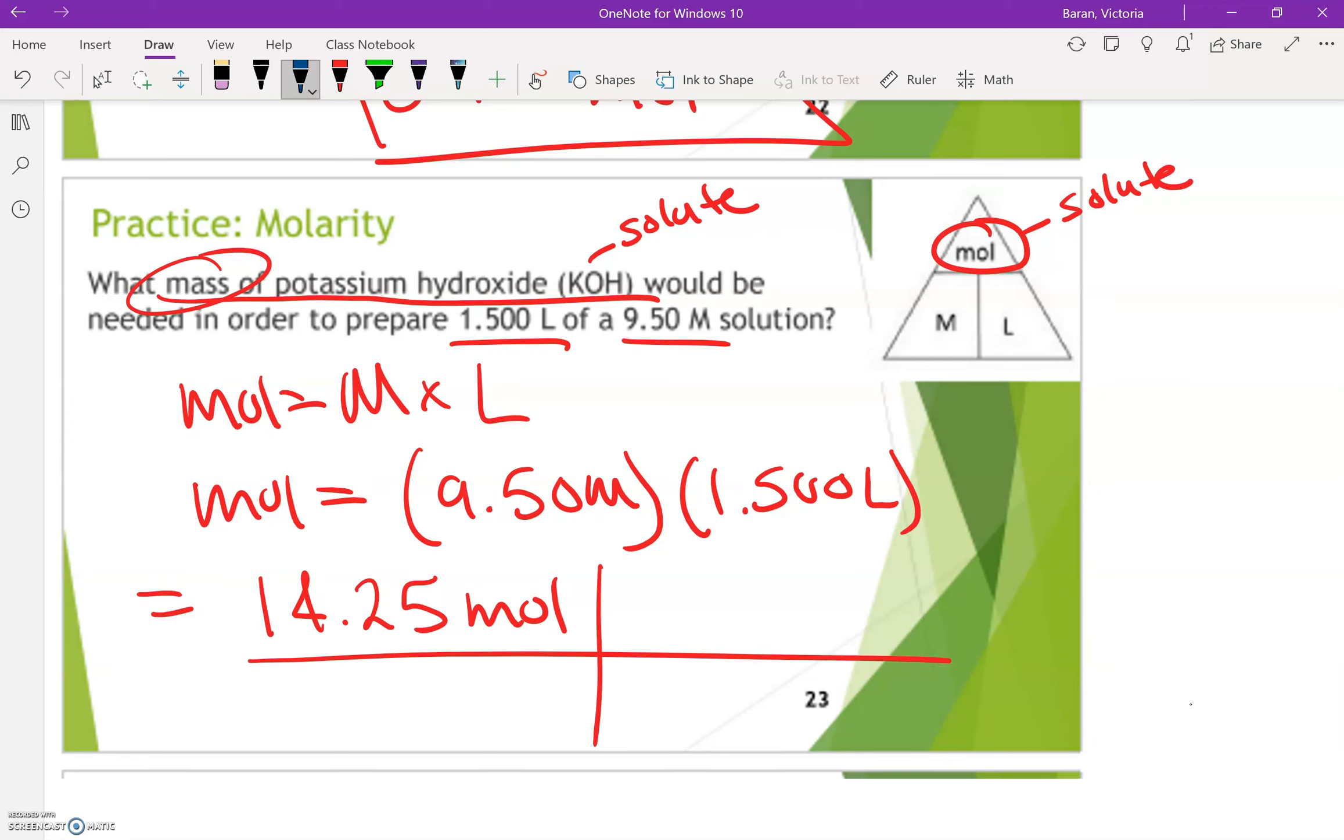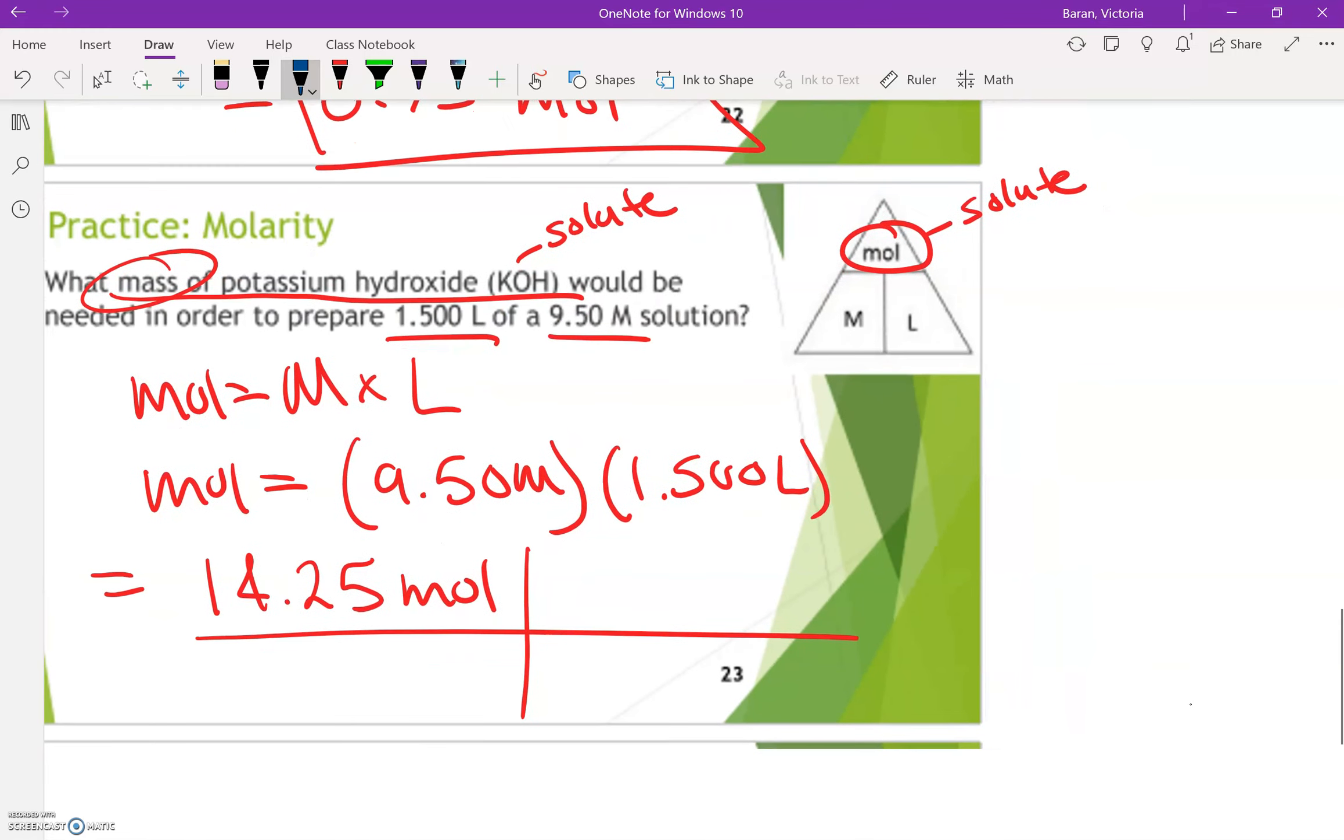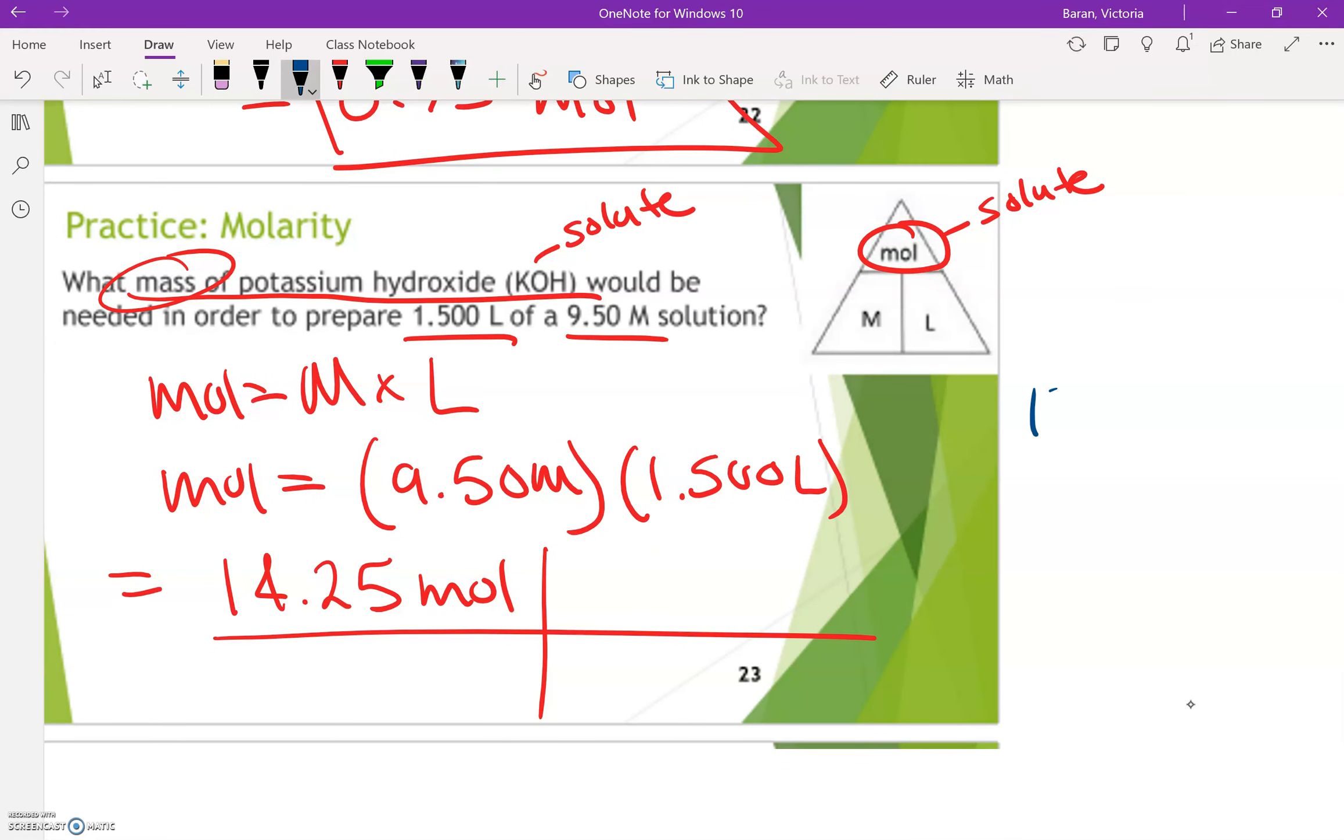So now I need to get moles into grams. How am I going to get moles into grams? I'm going to have to find the molar mass of KOH.